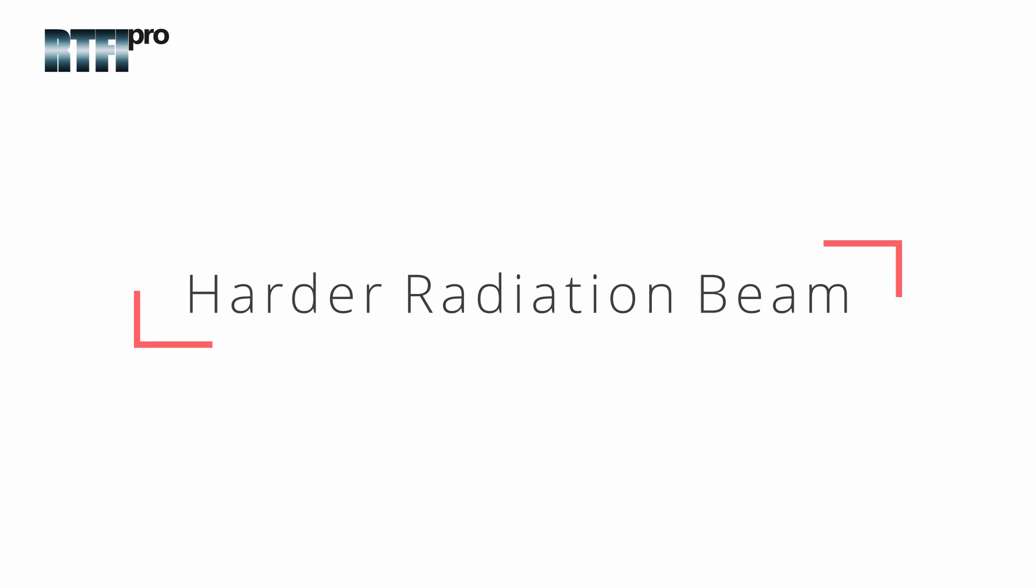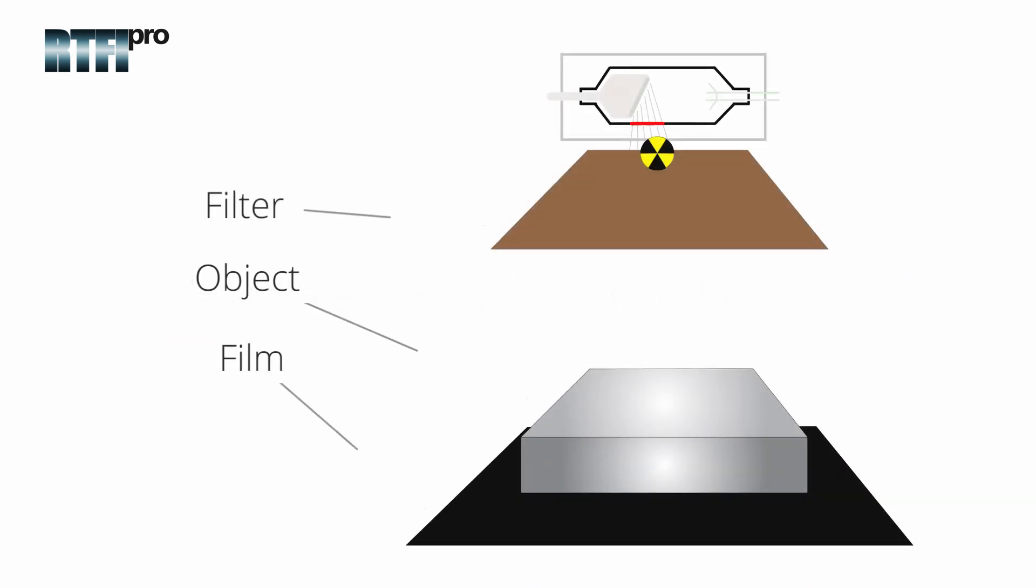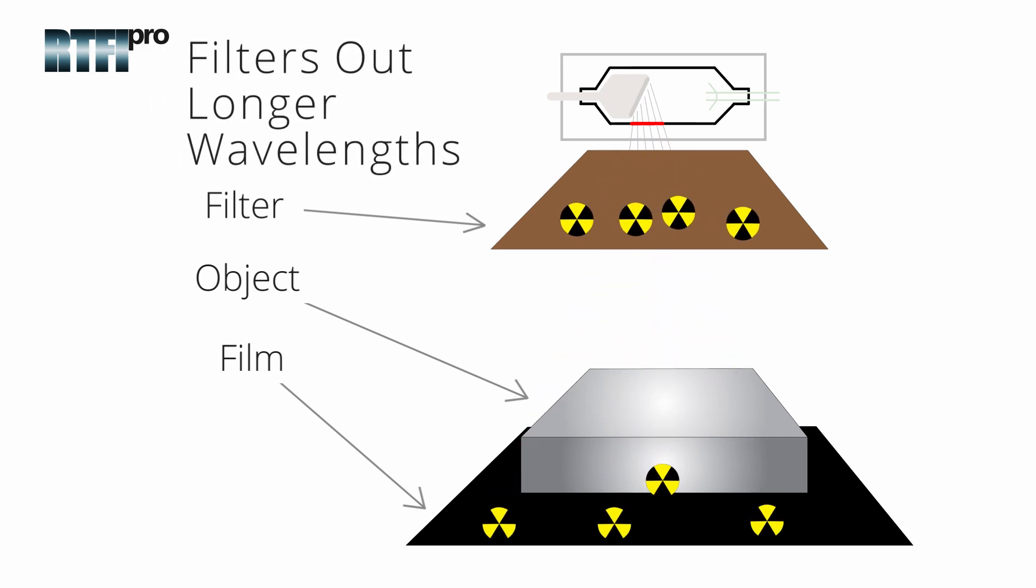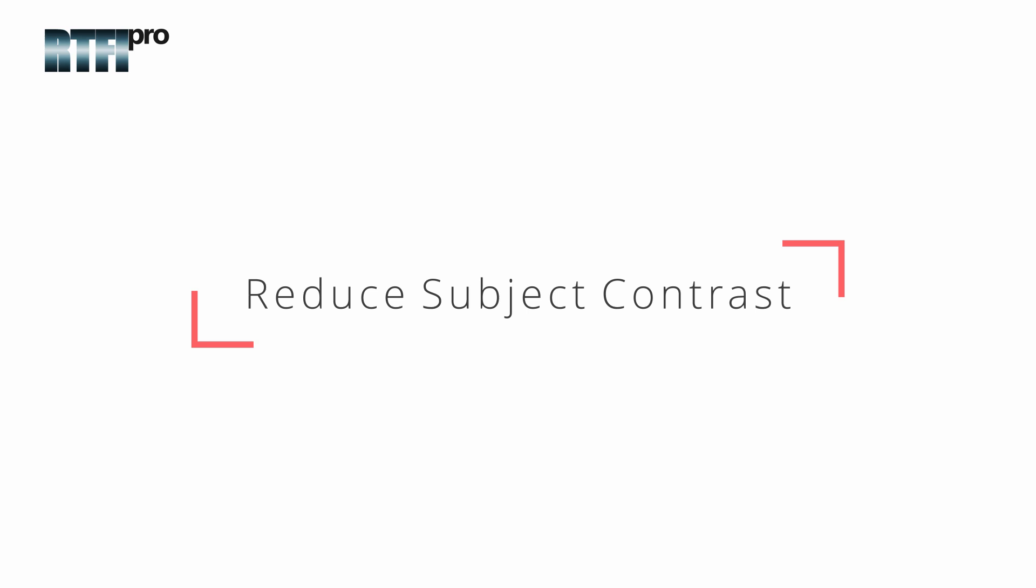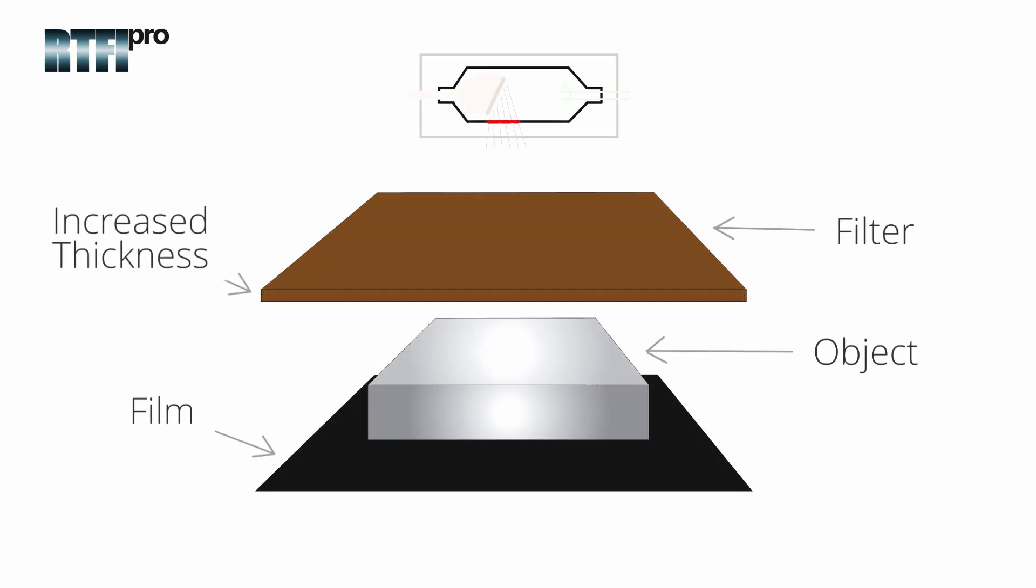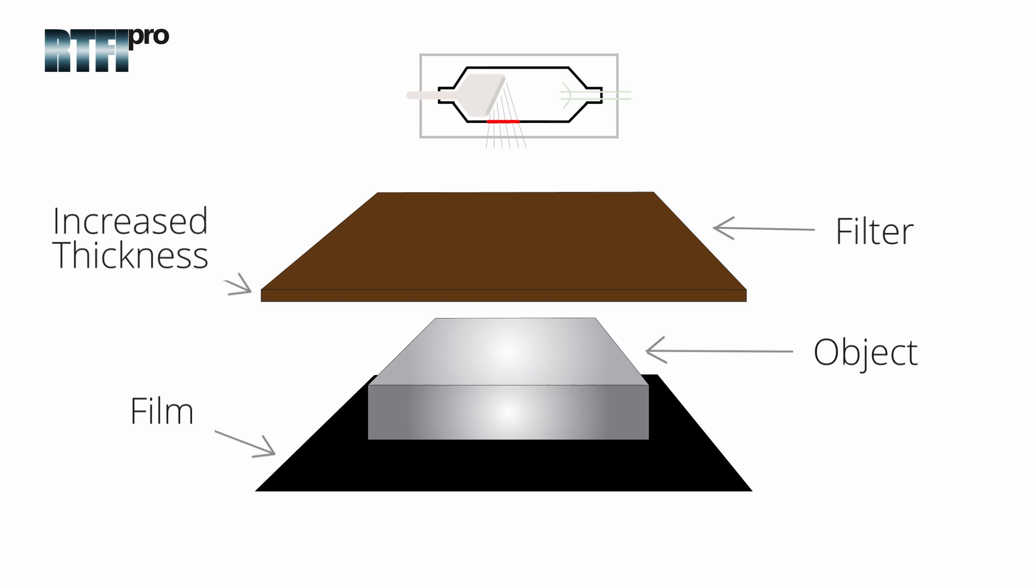As you see in the image, only the shorter high energy wavelength photons are penetrating and the lesser energy longer wavelengths do not penetrate the filter. The longer wavelength photons are undesirable as the filter will help reduce subject contrast by filtering out the softer radiation photons. The amount of hardening depends on the type and thickness of the filter material.